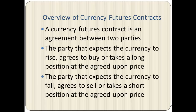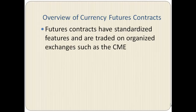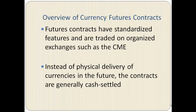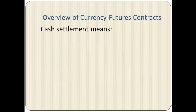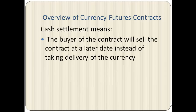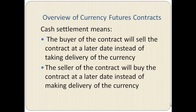Futures contracts have standardized features and are traded on organized exchanges such as the Chicago Mercantile Exchange. By standardized features we mean the contract size, for example 125,000 euros. Instead of physical delivery of currencies in the future, the contracts are generally cash settled. This means the buyer of the contract will sell the contract at a later date instead of taking delivery of the currency, and the seller of the contract will buy back the contract at a later date instead of making delivery of the currency.